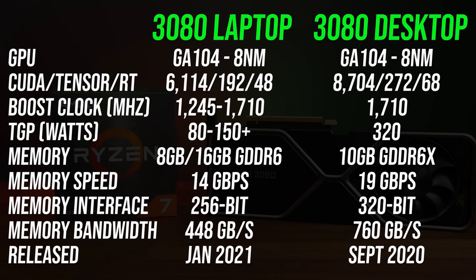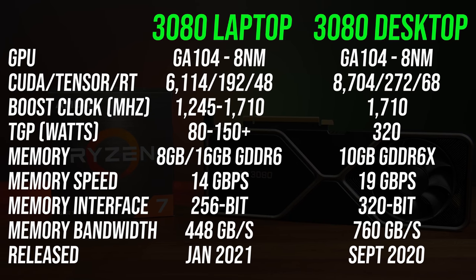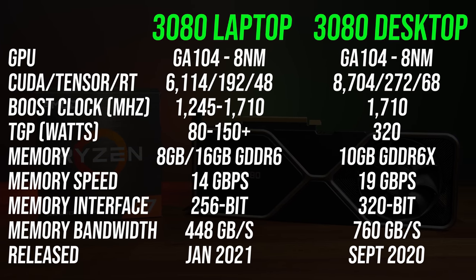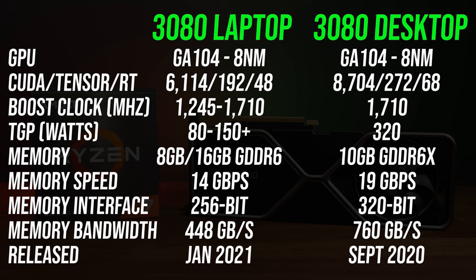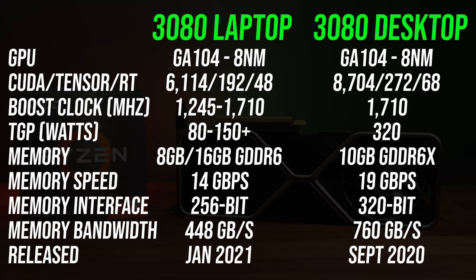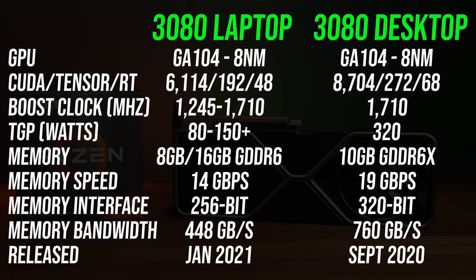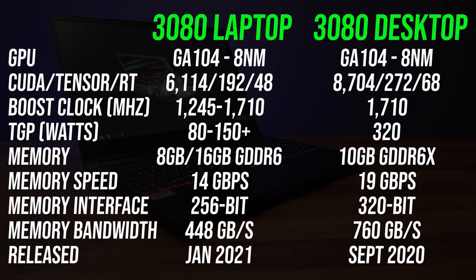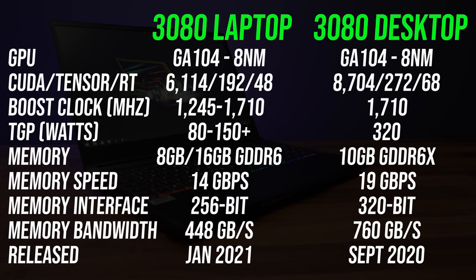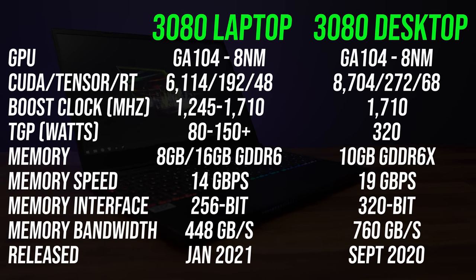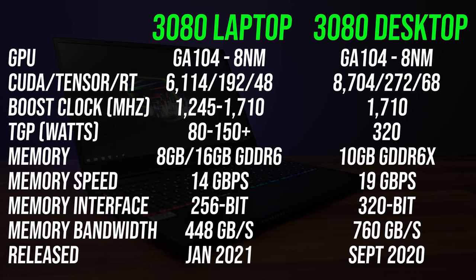Here are the differences in specs between the 3080 mobile and desktop GPUs. Both are GA104 dies, but the desktop 3080 has 42% more CUDA cores compared to the laptop version. The laptop GPU is available with either 8 or 16 gigs of GDDR6 memory, while the desktop GPU has 10 gigs of faster GDDR6X memory. Both are listed with the same boost clock, however the desktop card's power limit is more than twice as high.